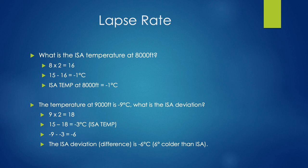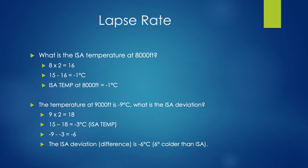This next question is an ISA deviation question. The temperature at 9,000 feet is minus 9 degrees Celsius — what is the ISA deviation? First, we work out what the temperature would be in ISA: at 9,000 feet at 2 degrees per 1,000 feet, there's an 18-degree difference from sea level, so 15 minus 18 gives minus 3. However, the actual temperature is minus 9, a difference of 6. So the ISA deviation is minus 6 degrees — it's 6 degrees colder than ISA.